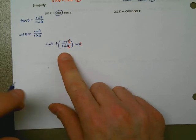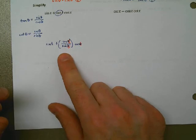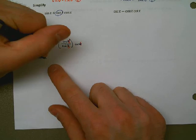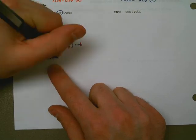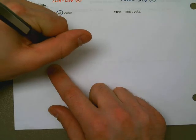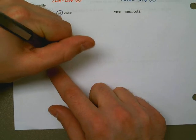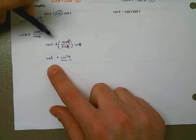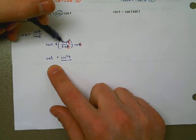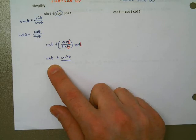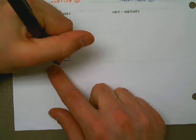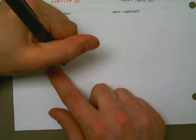Let's try the same thing over here. I look at this and I see I've got a cosecant, I've got a cosine, I've got a cotangent. I don't want to work with cosecant, so I'm going to put everything in terms of sine and cosine. I'll start by writing one over sine of t, minus cosine of t, and cotangent — as we talked about — is cosine over sine.